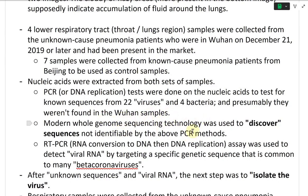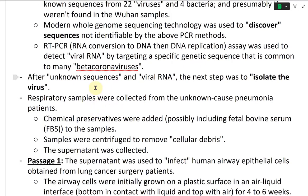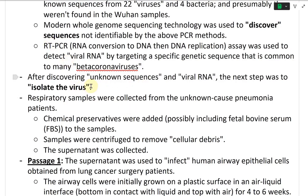Modern whole genome sequencing technology was used to discover sequences not identifiable by PCR. RT-PCR — reverse transcription PCR, going from RNA to DNA — was used to detect viral RNA by targeting a specific genetic sequence common to many beta coronaviruses. After discovering unknown sequences and viral RNA, the next step was to isolate the virus.